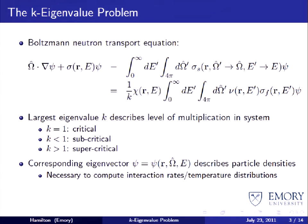That largest eigenvalue has a physical significance that tells you the level of multiplication of the system you're studying. If k is exactly equal to 1, we say we have a critical system and the population of particles will be stable in time. If k is less than 1, the system is subcritical and the particle population will decay. If k is greater than 1, the population will increase in time.